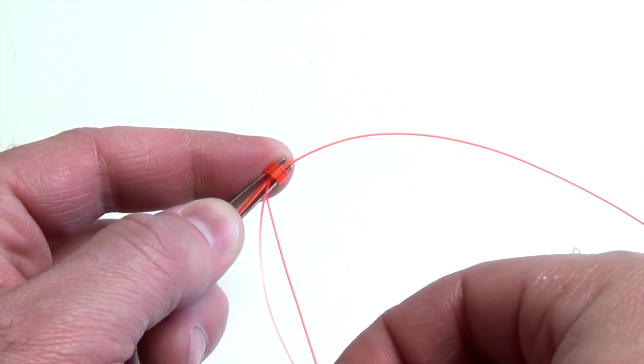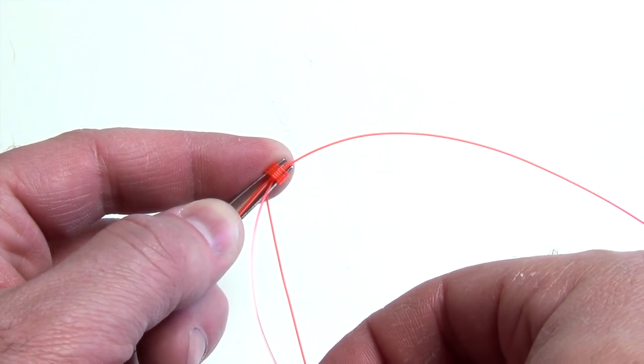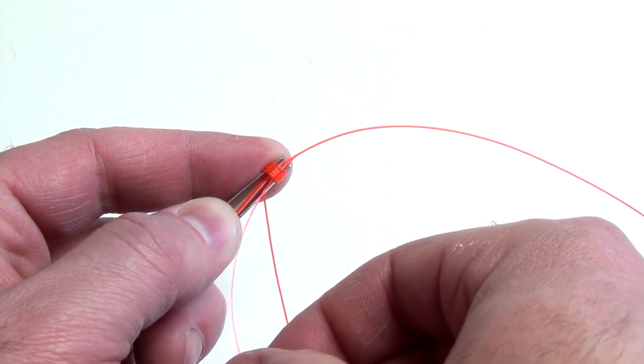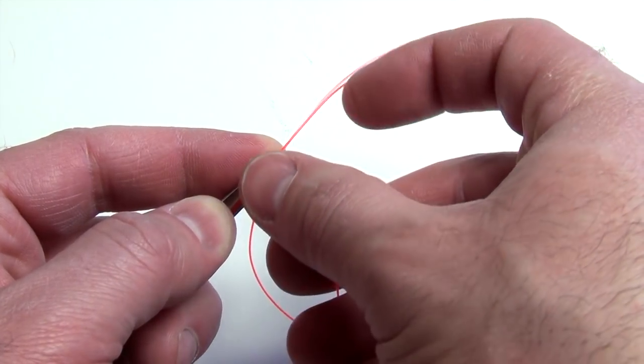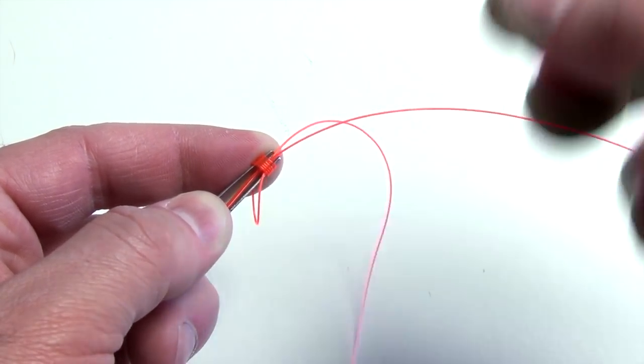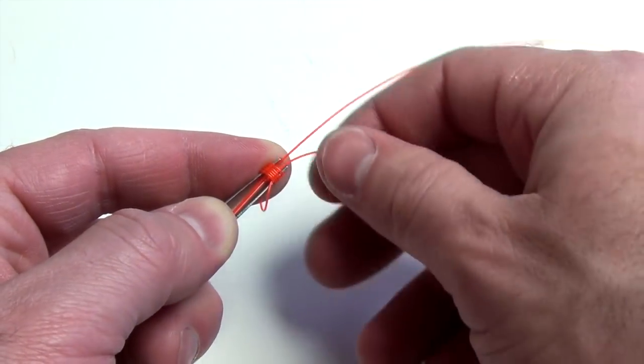I'm going to take the tag end, and I'm going to go back through the back end of the nose of the tool and out the front. I just thread it through there, then I can just pull the tag end.